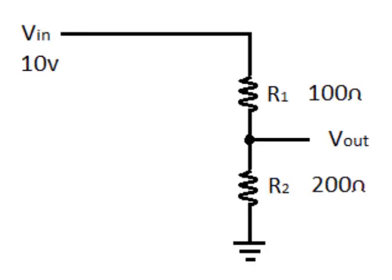As an example I've put some values into my circuit and will calculate the actual output voltage with Vin as 10 volts, first resistor 100 ohms, second resistor 200 ohms. So let's calculate output voltage in this case.